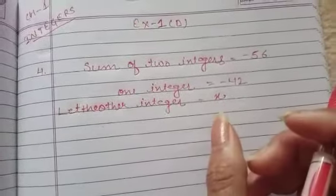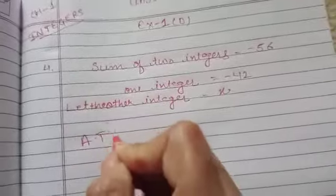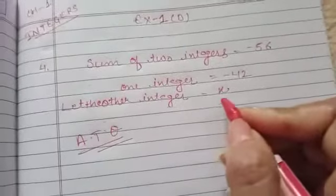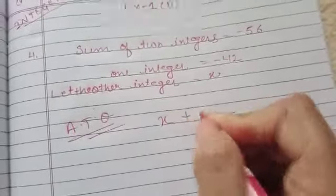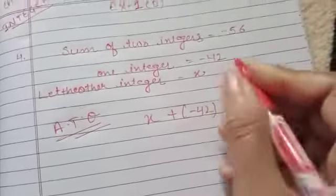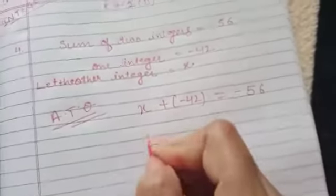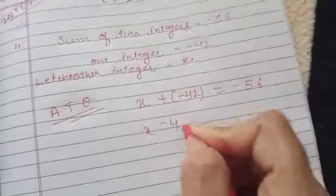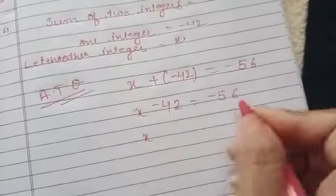As I have told you, if one we have to find then we will let it. Now according to the question, sum of two integers means these two integers. Write its sum equals to the total sum. So x plus -42, now it's an equation.